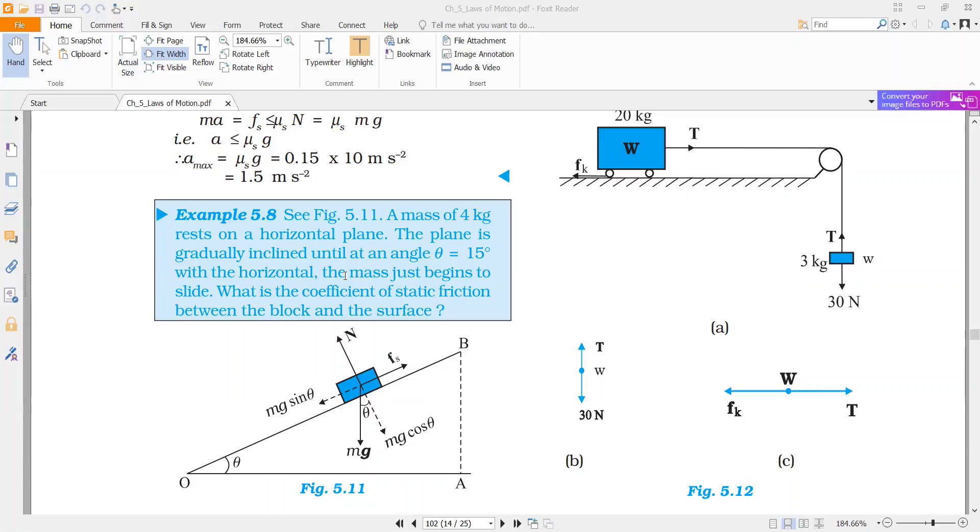Now we know that the coefficient of friction between the two surfaces is given by mu is equal to tangent of angle of repose, that is theta.